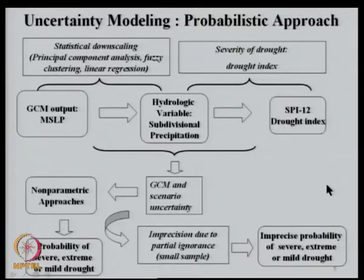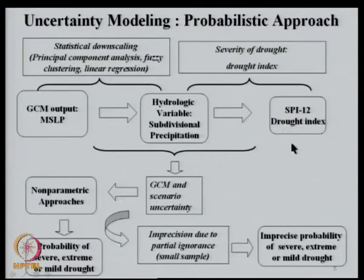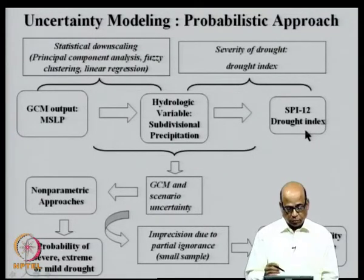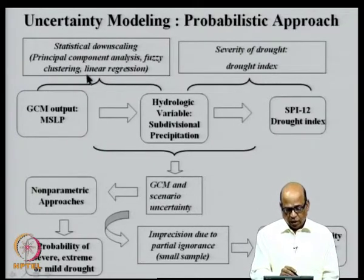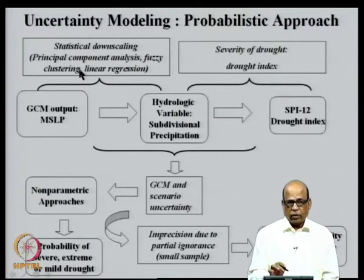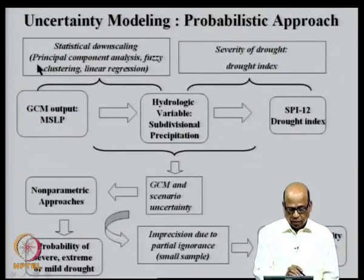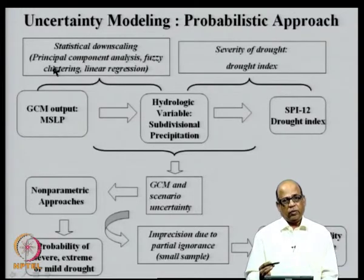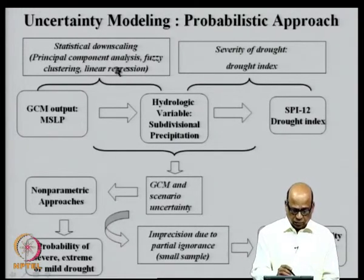The methods and techniques studied in this course will all come in handy when addressing these uncertainties. In the probabilistic approach, I will give a broad overview. In this particular application, we deal with the drought index — how the drought scenario is likely to evolve in a particular river basin. From the GCM, we do statistical downscaling using principal component analysis and linear regression, and we also add fuzzy clustering, though I will not cover that since it was not part of the course.